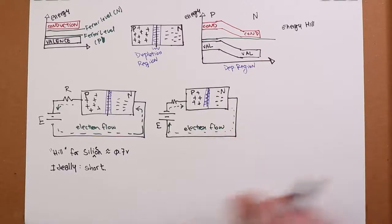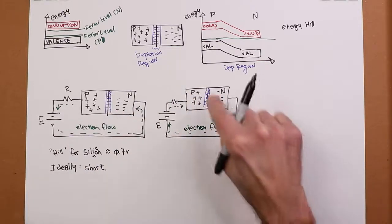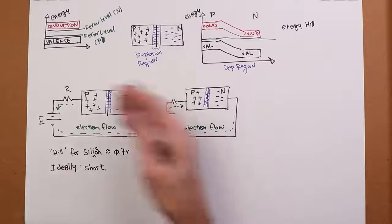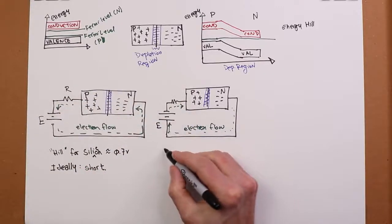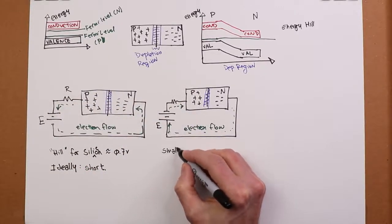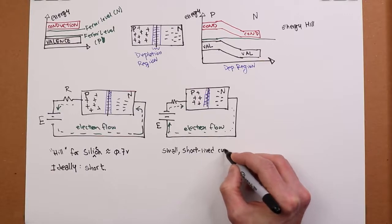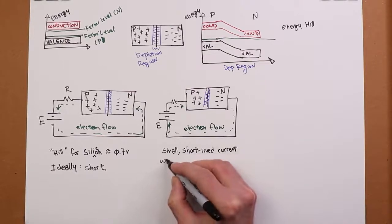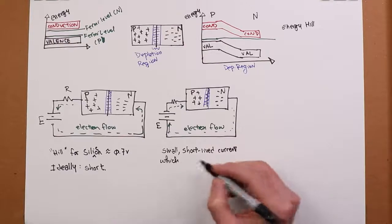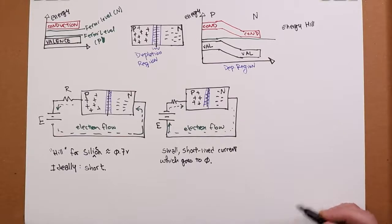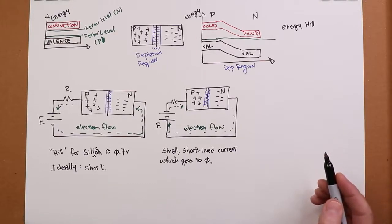So initially, there is this sort of short-lived little current. Because what ends up happening is that sort of dies because there's only so much. Because it's not being replenished as it would be in this case. So there's a small short-lived current, which goes to 0, ideally. Now, at that point, there's no current flow. Ideally, there is no current flow.